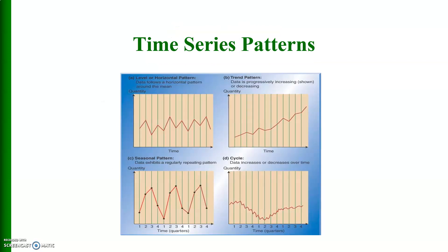Here are some time series patterns. A shows level or horizontal pattern, B shows a long-term trend, C shows seasonal pattern, and D shows cyclical variation or business cycle.